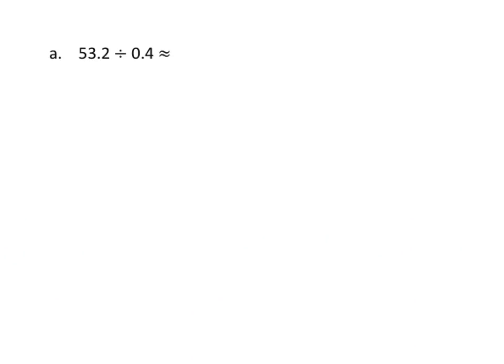Let's take a look at this problem here. It asks us to estimate this first. I'm going to take a few steps before I do the estimation. I'm going to rewrite this as a fraction, so I have 53 and 2 tenths divided by 4 tenths. I look at that denominator. It's tenths, so I need to multiply that by 10.